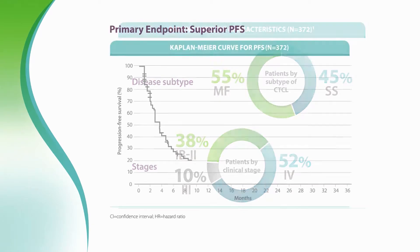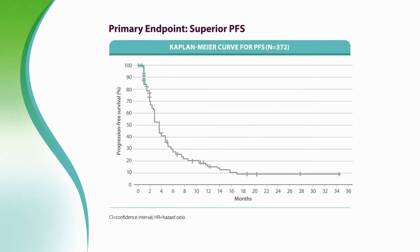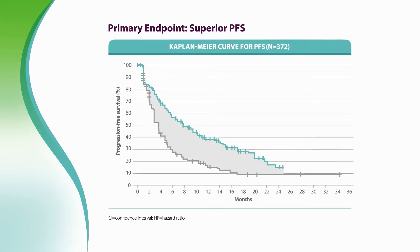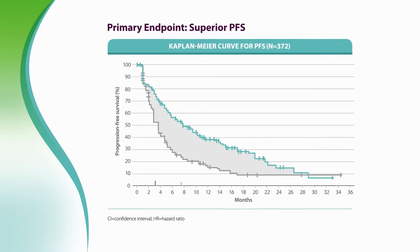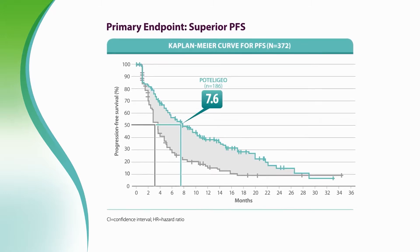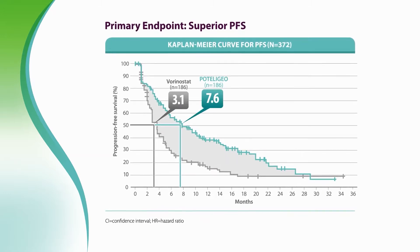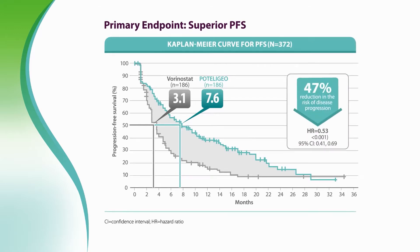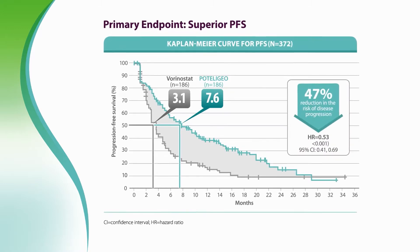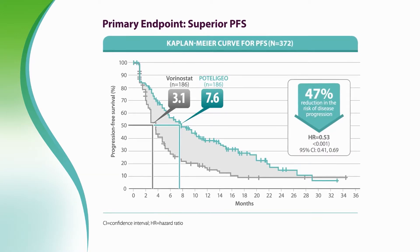In MAVERICK, mogamolizumab more than doubled progression-free survival: 7.6 months compared with 3.1 months for the vorinostat-treated patients.